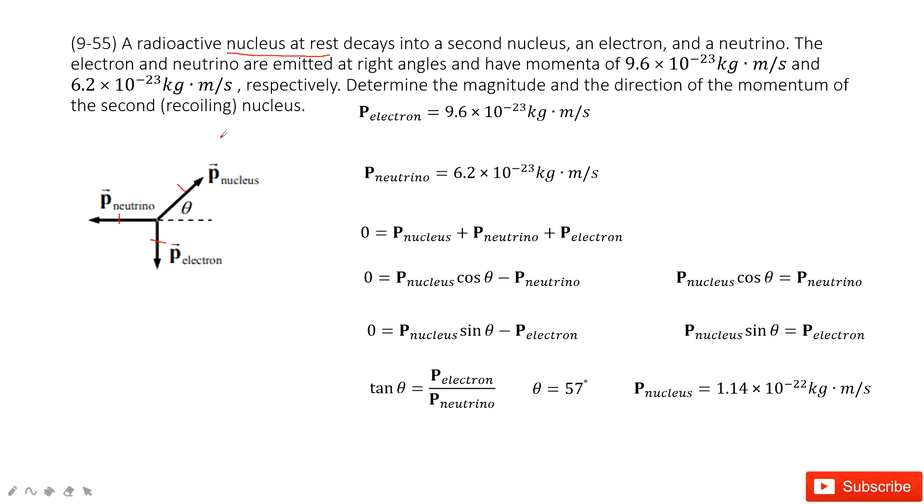And then the momentum for the electron is given, and for the neutrino is given. And we know this angle is 90 degrees.